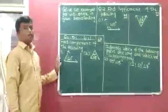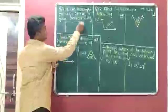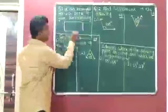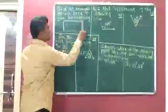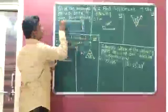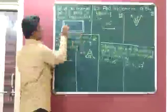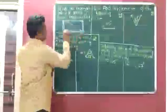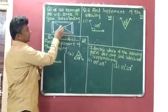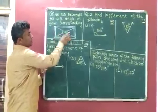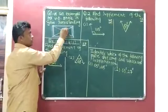Now I will draw the figure of the iron grid. See, this is the figure of the iron grid. This angle and this angle are exactly opposite to each other, and they are vertically opposite angles.